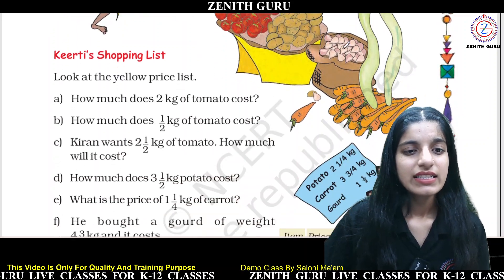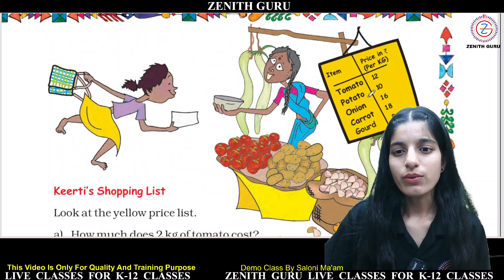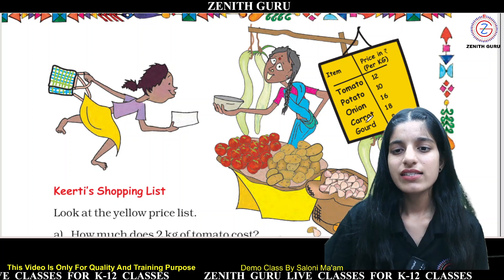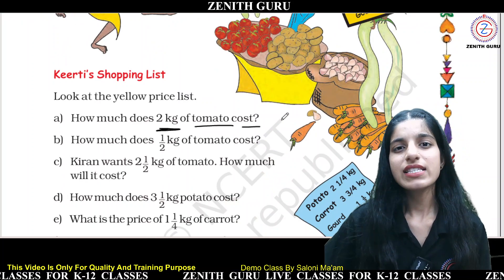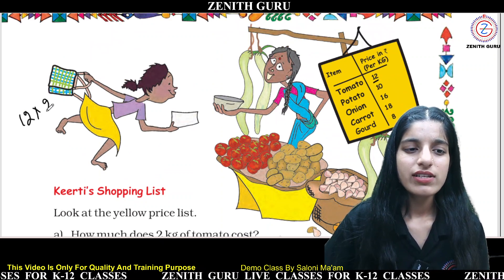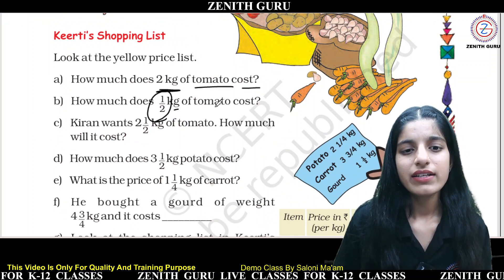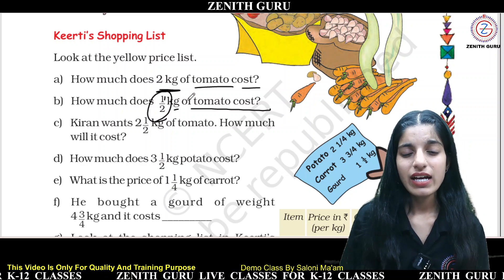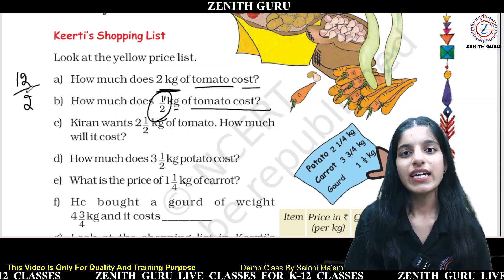Now look at the shopping list with the yellow price tags: tomato is 12 rupees per kg, potato is 10, onion is 16, carrot is 18, and wheat is 8. How much does 2 kg of tomato cost? 1 kg is 12 rupees, so 12 multiplied by 2 gives the cost. How much does 1/2 kg of tomato cost? We divide 12 by 2 — that gives us half the price.